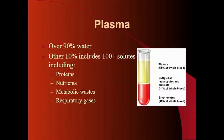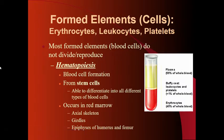Basically, these are the things that blood is carrying along with it as it's functioning in transport. The formed elements make up the rest of the blood, and we could think of these as the solid components of blood. These would be the erythrocytes, the leukocytes, and the platelets.